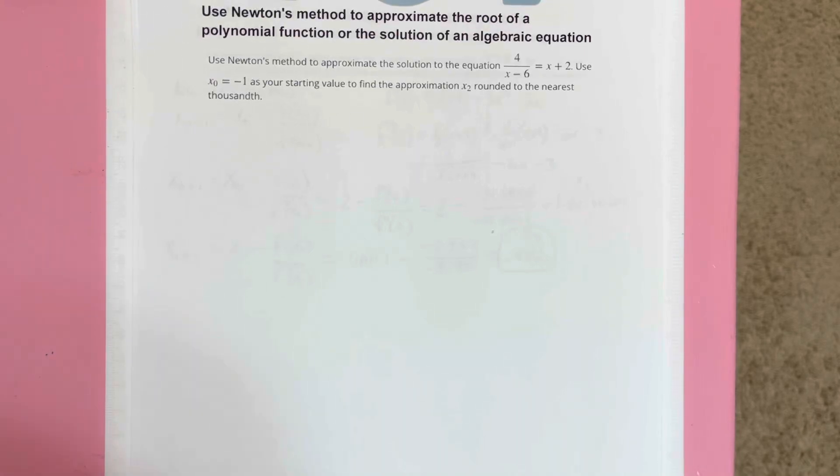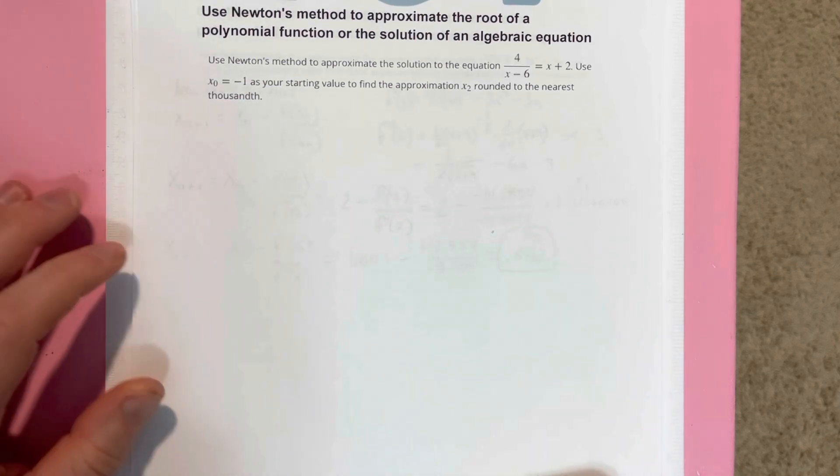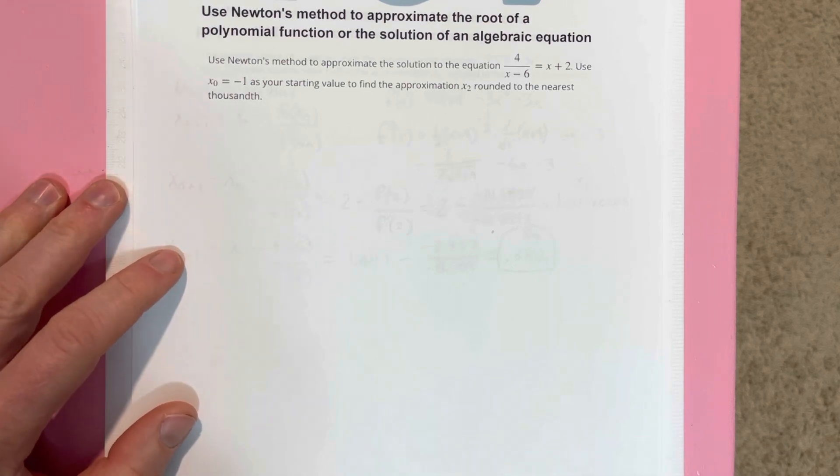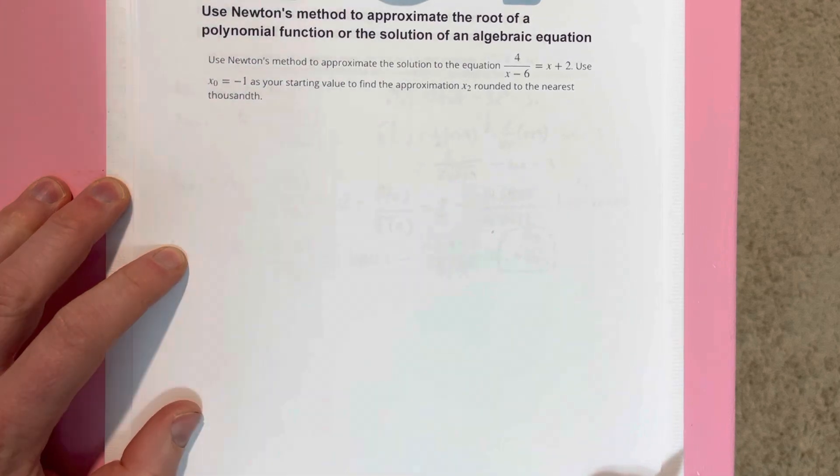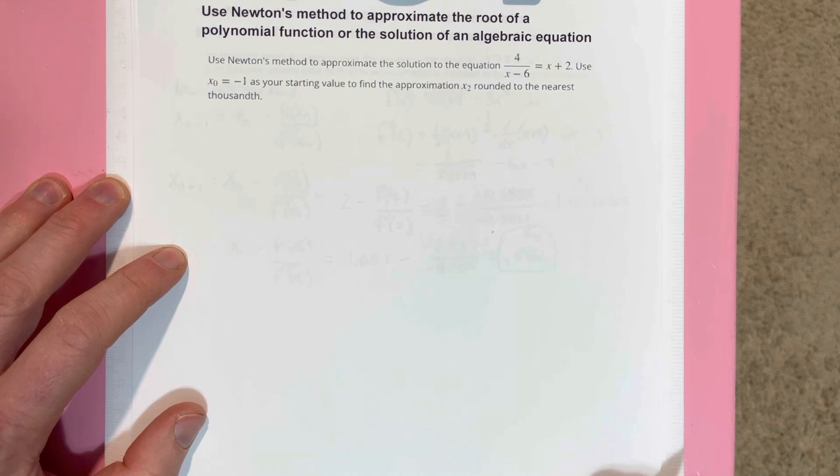In this video, we're going to use Newton's method to approximate the root of a polynomial function or the solution of an algebraic equation. It says use Newton's method to approximate the solution to the equation 4 divided by x minus 6 equals x plus 2. Use x₀ equals negative 1 as your starting value to find the approximation x₂ rounded to the nearest thousandth.